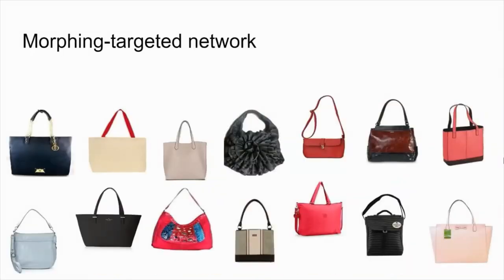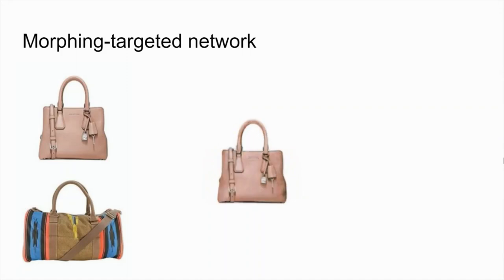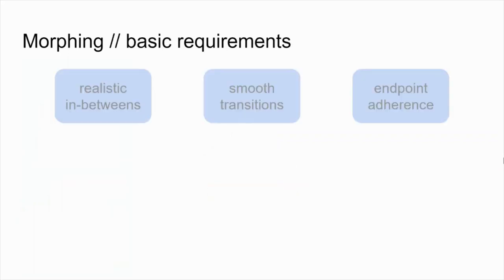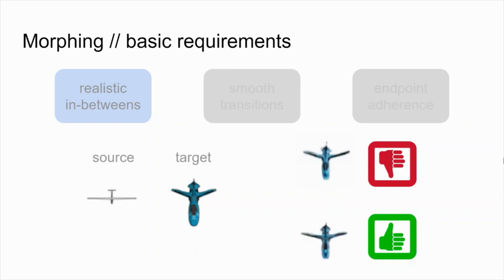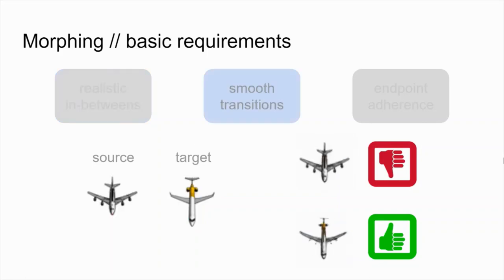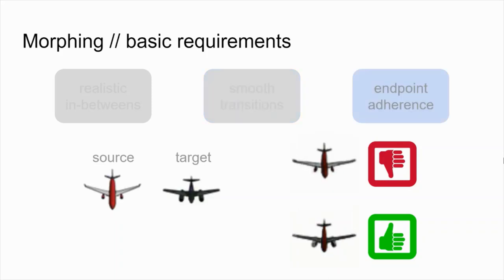In this work, we wish to utilize large collections of images in a conditional GAN framework to learn how to transition between given instances. We identify three basic characteristics that are crucial for a convincing morphing effect. First, we require that the generated in-between instances appear to be realistic and portray objects that could pass as valid members of the given class. Second, the transition from instance to instance must be smooth to create a visually pleasing effect. And finally, endpoint instances must adhere to the given source and target images in order to bootstrap the generation of the entire sequence.